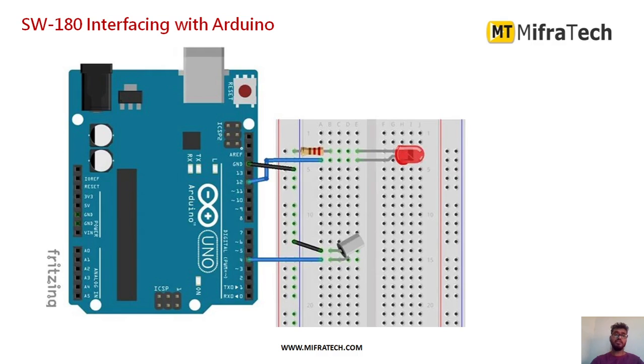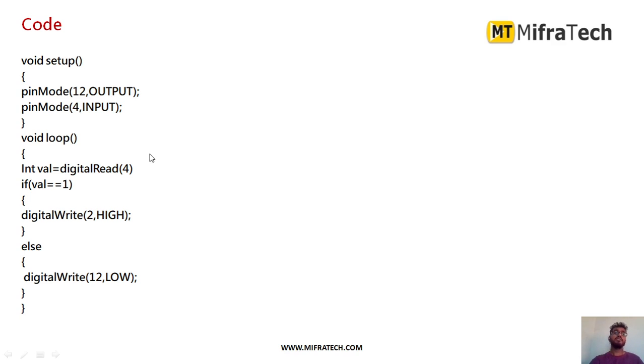Next we'll see how to program it. First, initially we have to do the setup: define the pin mode. I am using the LED as an output pin, so I'm mentioning pinMode LED connected to pin number 12 as OUTPUT. The sensor is connected to digital pin number 4 of Arduino Uno microcontroller, so I'm defining the sensor as INPUT, as you can see here.